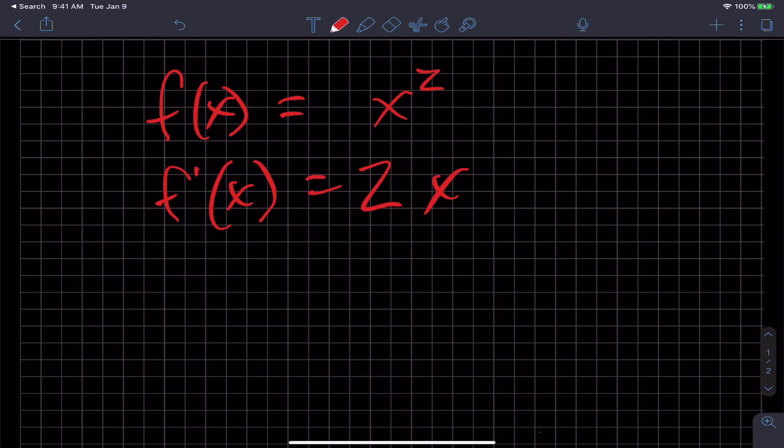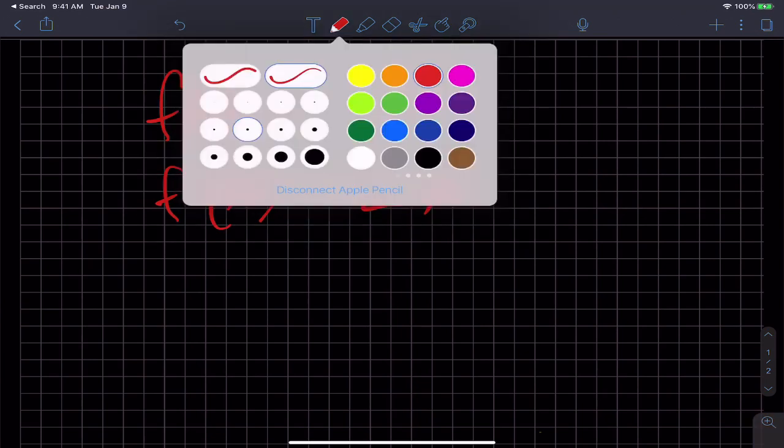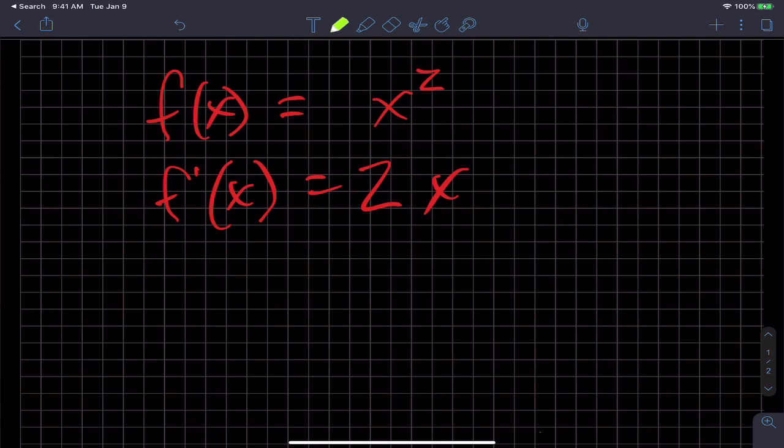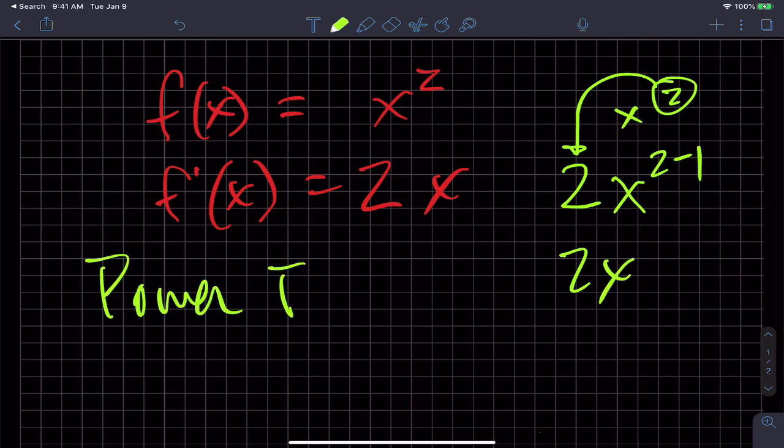Because the way the derivative works, you take the exponent, it becomes the coefficient and the base of my power comes down. Then I take two and subtract one from the exponent. So I get 2x. That's how we deal with power functions.